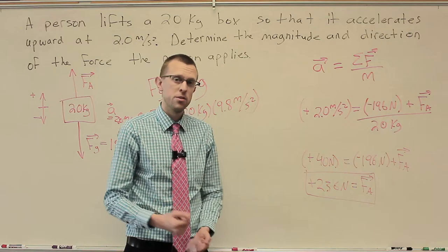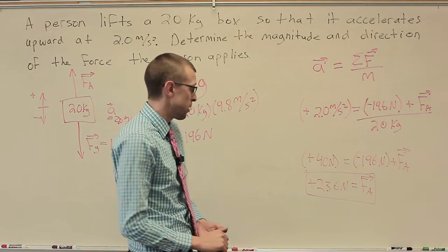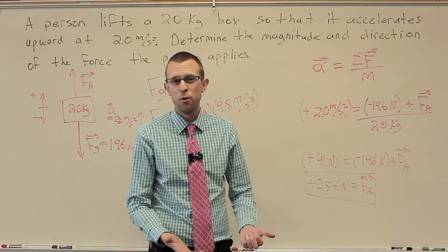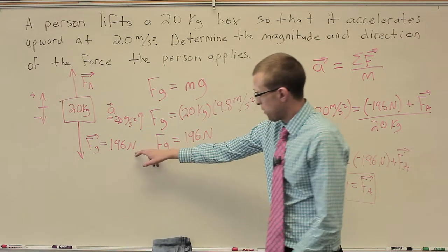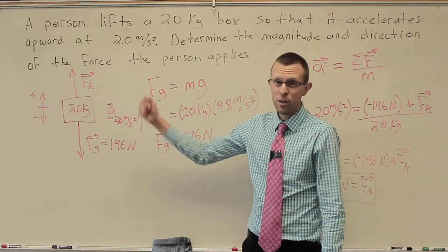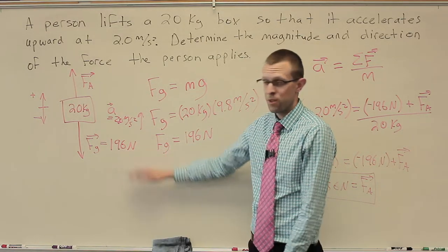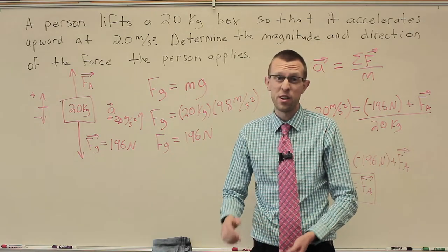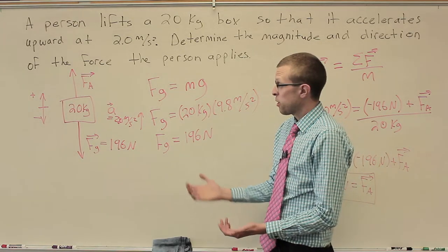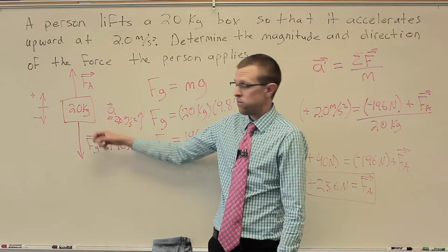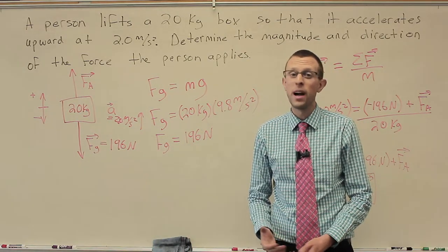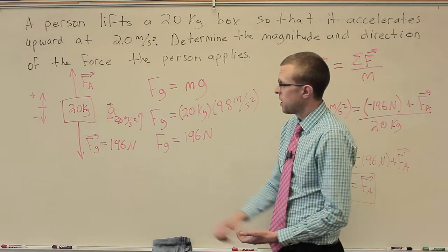Or 236 newtons upward. So, again, the trick here with picking out that gravitational force, if you didn't do that, then you would probably just get this number. You'd do the 20 kilograms times 2 meters per second squared and you get 40 newtons as your applied force. But when we have this on here, we'd see an upward 40 newton force wouldn't be enough to overcome gravity. And we'd have this thing accelerating downward as a result.